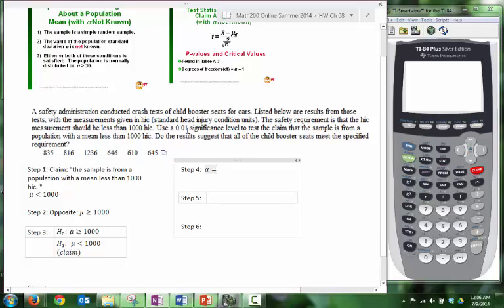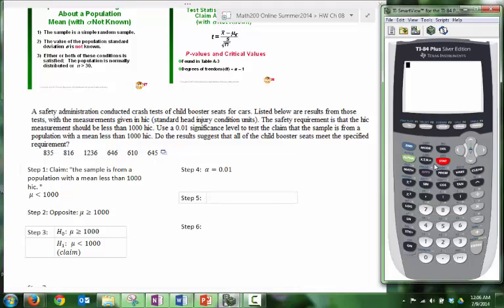Our alpha here, they give it to us, 0.01. And then now we want to collect information. I think what we can do is we can have our calculator do our work for us. So let's go to a list that we can edit and then let's type in these values.